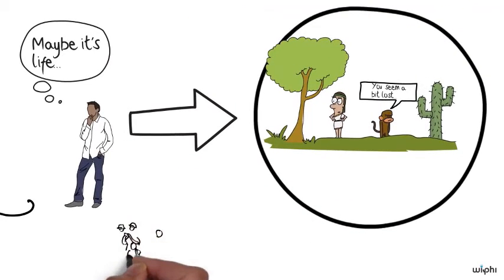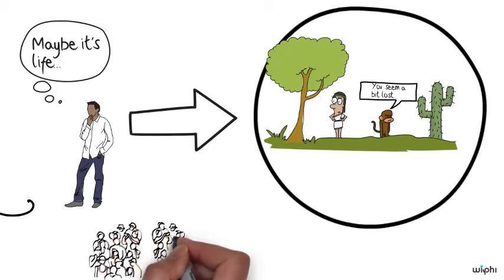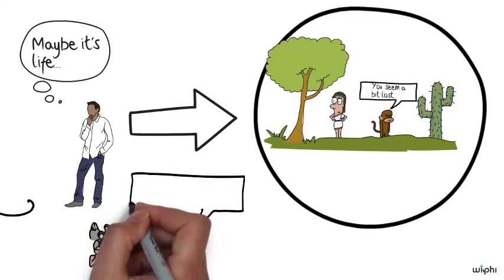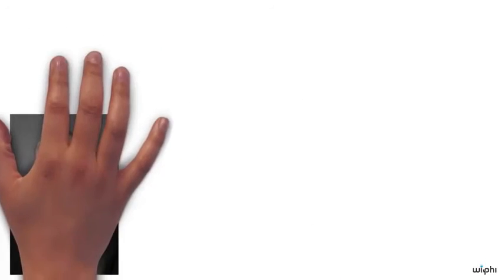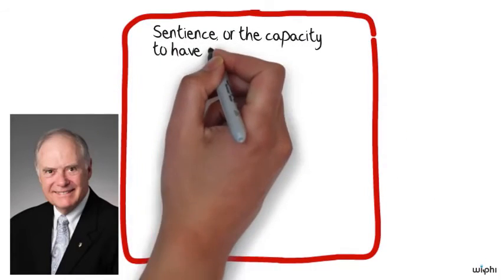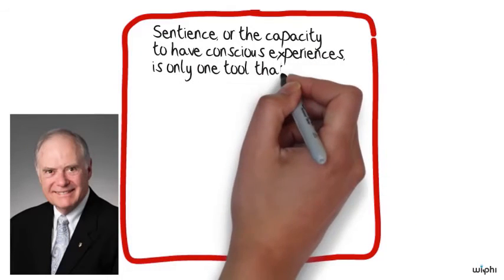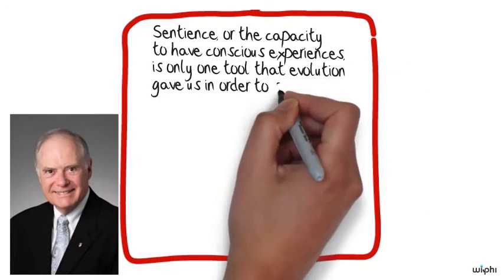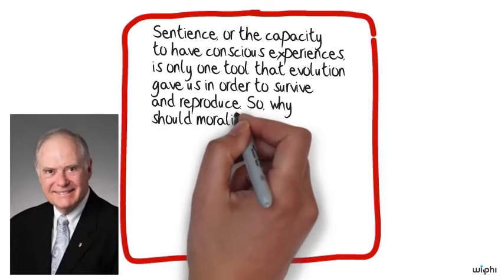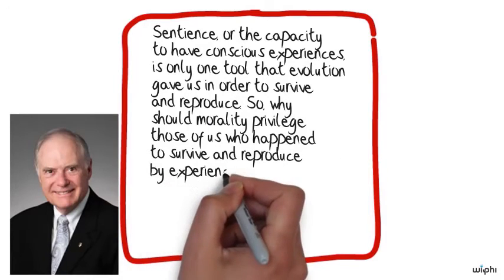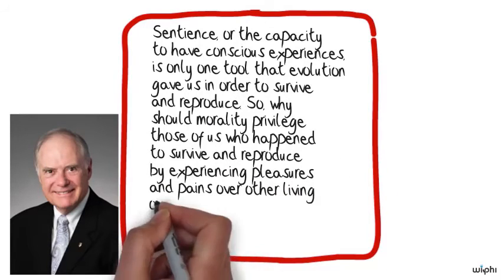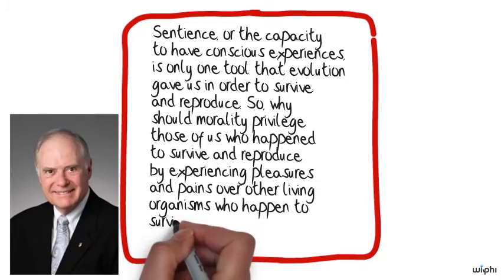And many people think that this view is plausible because they say that our preference for sentience is no different from a preference for human beings or, say, white people or men. These are all forms of prejudice for one group over another based solely on membership in a particular biological category. As Kenneth Goodpastor puts the point, sentience, or the capacity to have conscious experiences, is only one tool that evolution gave us in order to survive and reproduce. So why should morality privilege those of us who happen to survive and reproduce by experiencing pleasures and pains over other living organisms who happen to survive and reproduce in other ways?